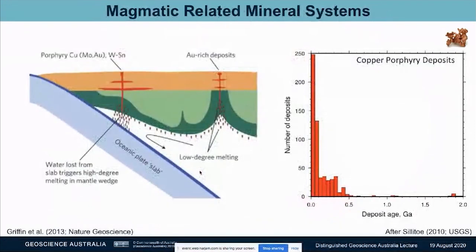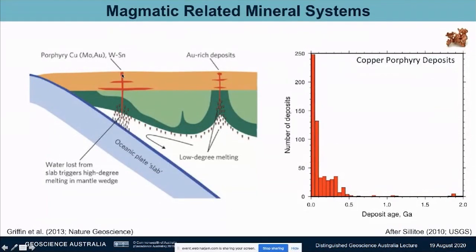You can see the tectonic plates beautifully in this map. In the centre of the oceans, you can see the mid-ocean ridge, and then the oceanic plate spreading out — as if you were to join Africa and South America together. Geologists have been wondering what controls the distribution of these deposits for quite some time. That concept of what controls deposit distribution is called a mineral system. In the porphyry copper case, it's associated with the subduction of one tectonic plate underneath another, and there are earthquakes that basically occur as part of that subduction.